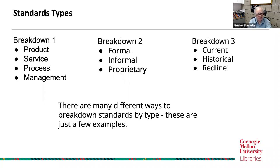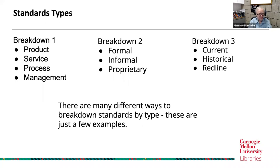A typical product standard might be something like an electric vehicle charger or a standard gauge for a railroad. It could be a process — like ISO standards have certain processes in place. Their management standards are rather famous: 'Is your company ISO certified?' It's a very important way to break down the standards.